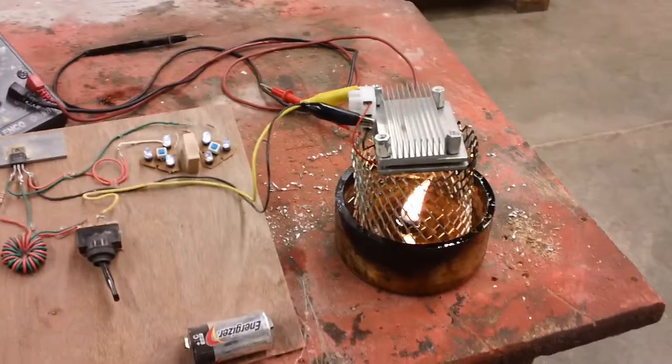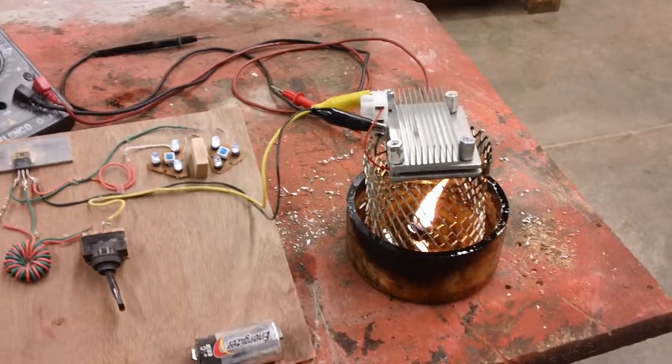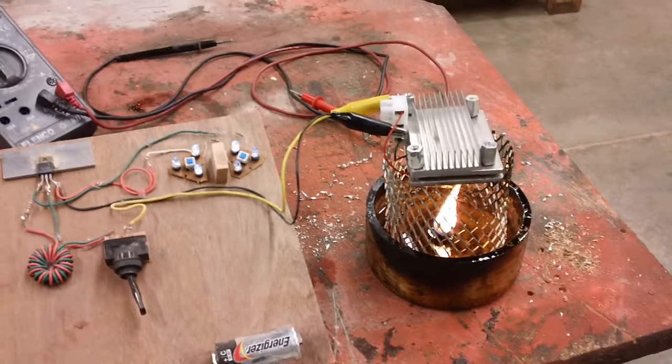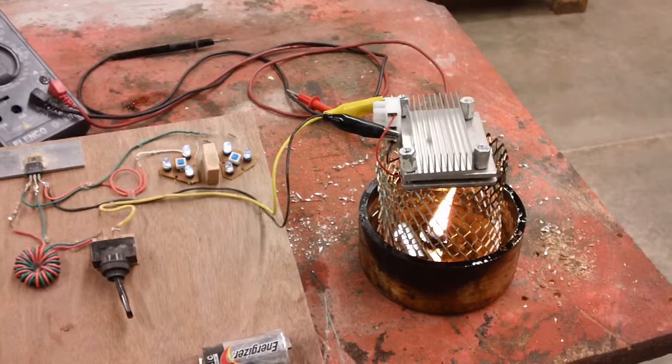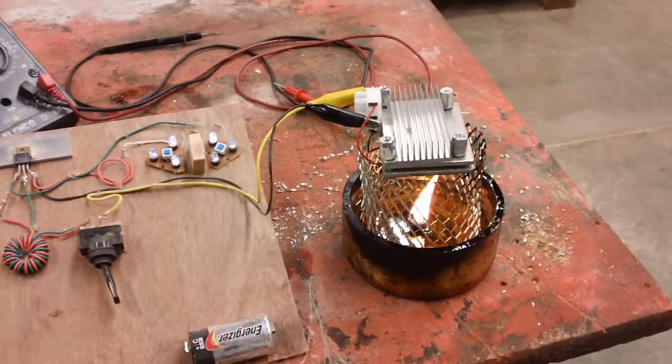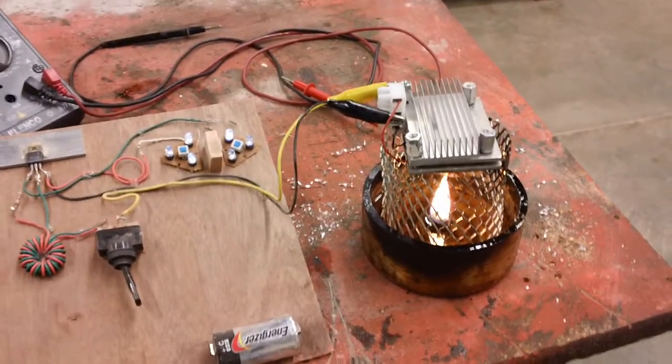Actually, that little device there should, if there's a 100-degree temperature differential from one side to the other, it should be putting out 10 watts. Of course, there it's not quite that. It's just a heat sink, and that's not putting off near enough heat to get it up to 10 watts.